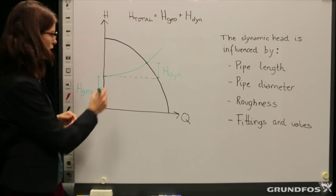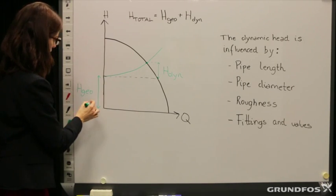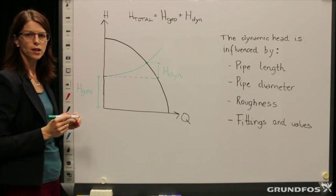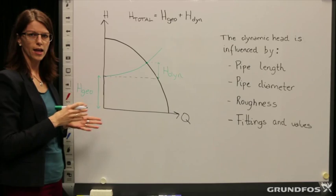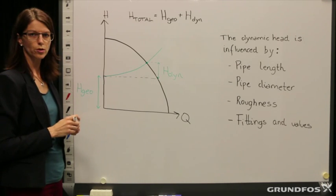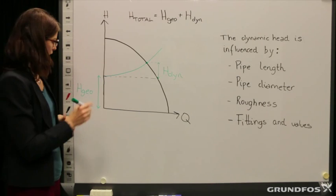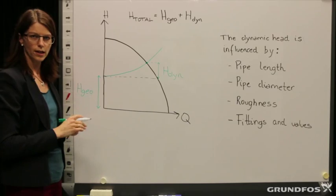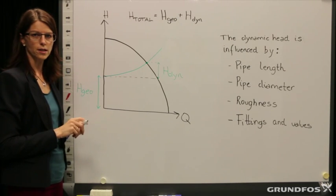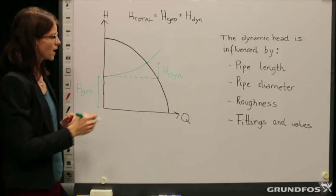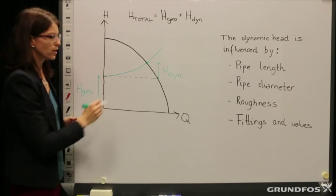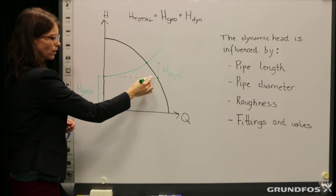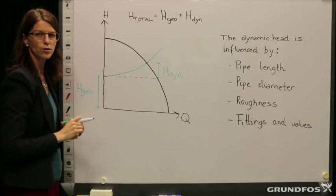I have drawn a curve here with a system curve and a pump curve. The geodetic head is characterized by the height between the pump and the sewage mains where the wastewater is transported to. We say that it is a constant — it can vary a little bit depending on the level in the lifting station or pumping station. The slope of the system curve is the dynamic head, and that is a very varied value depending on the flow.